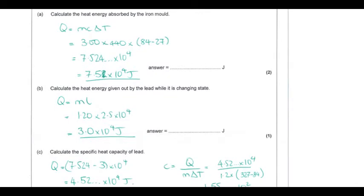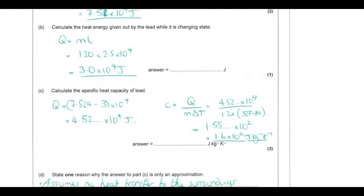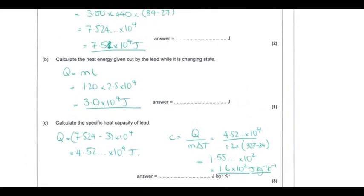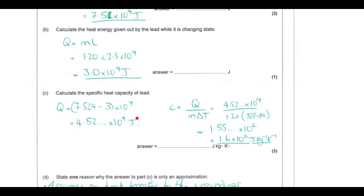To find the specific heat capacity of lead, first calculate the heat energy given out during the phase change using Q = mL with the mass of lead and the latent heat of fusion. Then find the difference between the total energy absorbed by the iron and the energy released during the lead's phase change — this gives the energy lost by lead due to temperature change. Substituting into Q = mcΔT and solving gives approximately 155 J/kg/K, or 1.6 times 10 to the 2 to two significant figures.